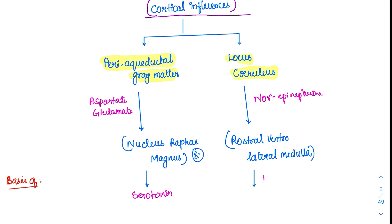The norepinephrine and serotonin released from these brainstem regions go on to inhibit the spinal cord neurons carrying the pain signal. The central neurons influence pathways downward — that is why this type of pain control is called supra-spinal level pain control.